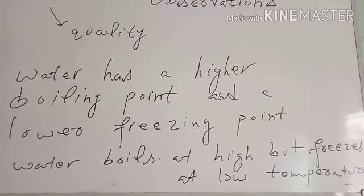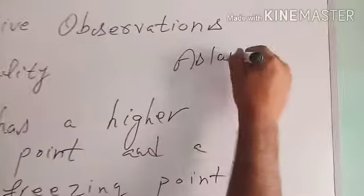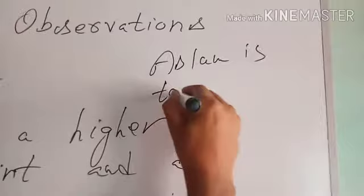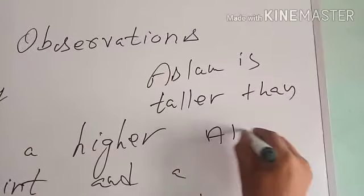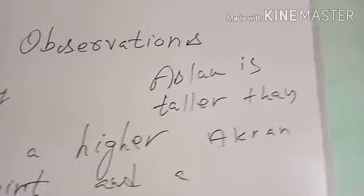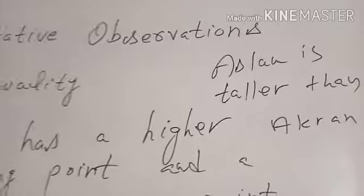We don't know what is the height of Aslam and what is the height of Akram, so such observations which don't give the quantity but just give the quality, a superficial difference, are called qualitative observations.